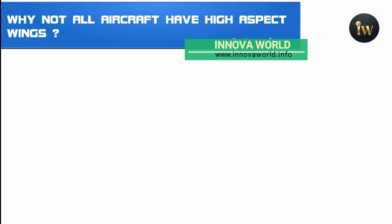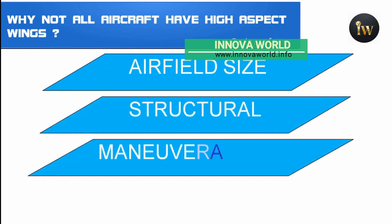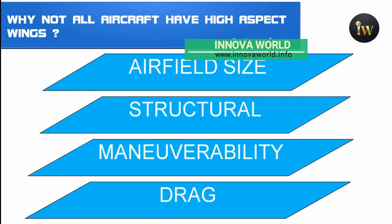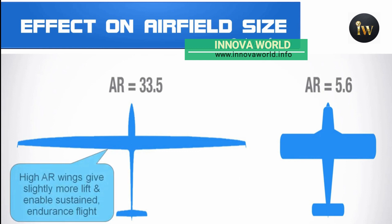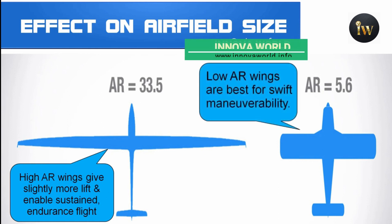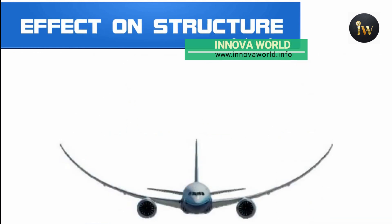There are several reasons why not all aircraft have high aspect ratio wings. There are majorly four factors: size, structural, maneuverability, and drag. When it comes to sizing or airfield size, a high aspect ratio wing generally gives slightly more lift and ensures sustained and steady flight, whereas a low aspect ratio wing is best for swept maneuverability.